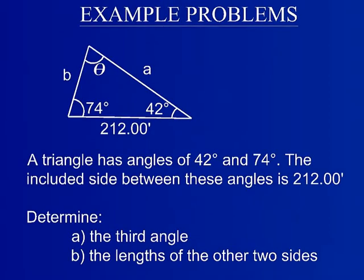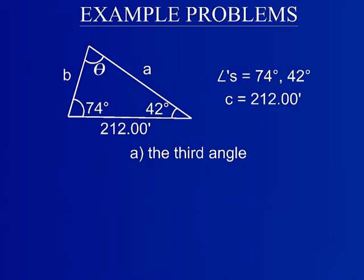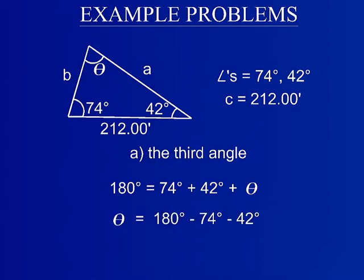The second example problem will demonstrate the use of the law of cosines and the law of sines in oblique triangle problems. Given a triangle with a side 212 feet long that is between angles of 42 degrees and 74 degrees, what are the two remaining side lengths and what is the remaining angle? Using the knowledge from the first example problem, the third angle can be found by subtracting the two known angles from 180 degrees. The remaining angle is labeled theta, and theta can be found to be 64 degrees.